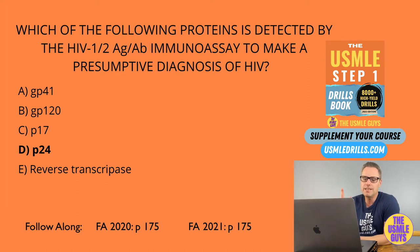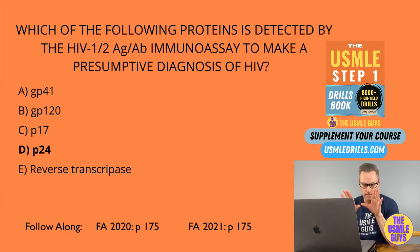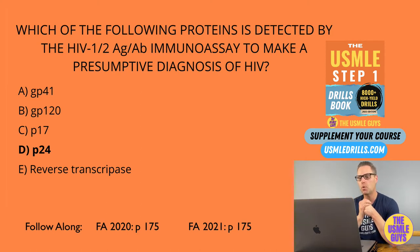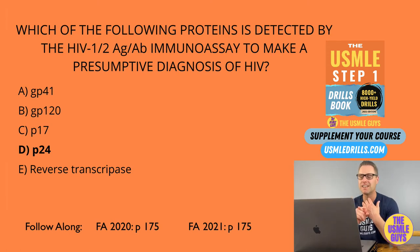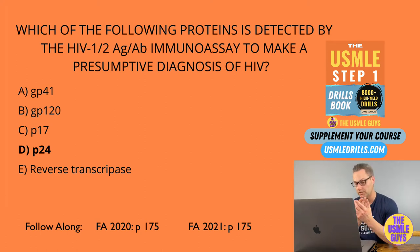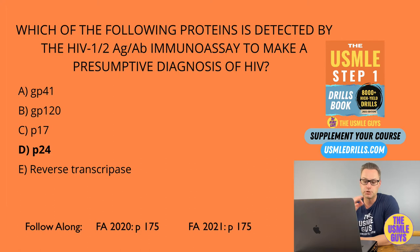Remember, HIV is a diploid genome, and there are a few important proteins. First, we have GP41 — this is a transmembrane glycoprotein, acquired when the virus buds from the host cell, and it's needed for fusion and entry into other cells. GP120 is a docking glycoprotein responsible for attaching to the host CD4 T cell. P17 is a matrix protein, and P24 is a capsid protein. HIV has reverse transcriptase, which synthesizes double-stranded DNA from genomic RNA, and this then gets integrated into the host genome.